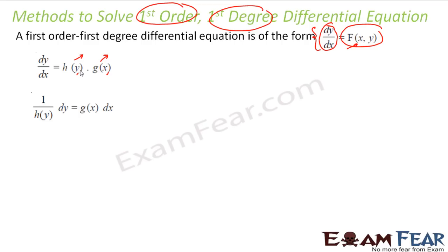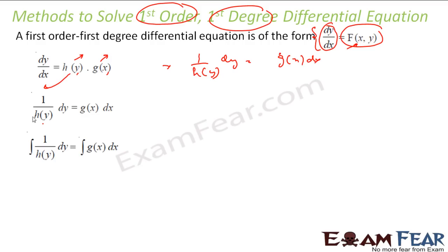If I can write in this fashion, what I can do is move h(y) to the left side: this becomes (1/h(y)) dy, and this becomes g(x) dx. You take (1/h(y)) dy equal to g(x) dx. Then you integrate both sides, and once you integrate you will get the solution. So this is the case where I can write in this fashion. We will solve some examples to make the approach clear.